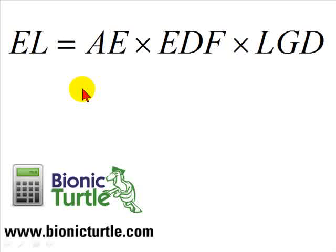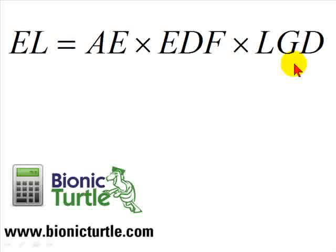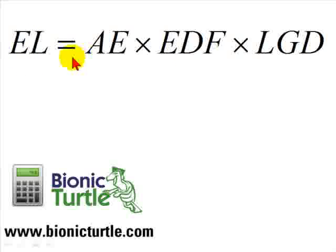Hello, David Harper of Bionic Turtle with the third in a series on expected loss and this formula for FRM candidates, which is very important to credit risk and credit risk portfolios. We've said that expected loss is equal to the product of three components, and two of the components I've looked at yesterday and the day before.